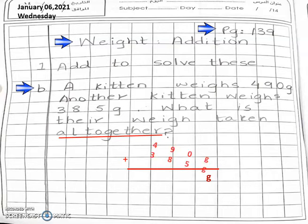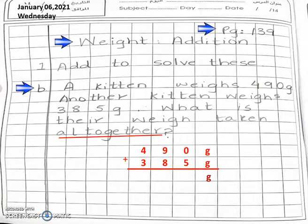So we will write down the numbers vertically, that is 490 plus 385. Why have we written the plus or addition sign here? Because in the question it is written 'all together.' Where it is written 'all together,' we will do addition.